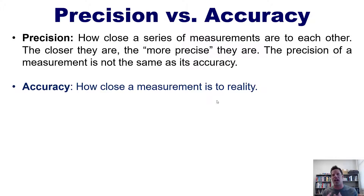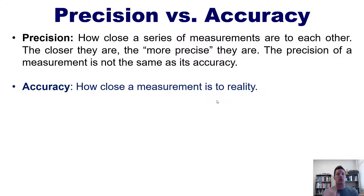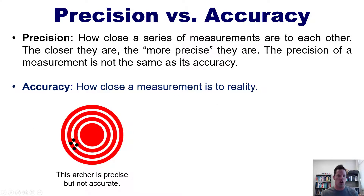For example, I want you to pretend that you are an archer. This is a metaphor that's frequently used — you're shooting a series of arrows at a bullseye. The bullseye represents the actual real measurement of something. Now if you shoot a bunch of arrows and they all go over here really close to each other, then you would say that your measurement is precise but it's not accurate.